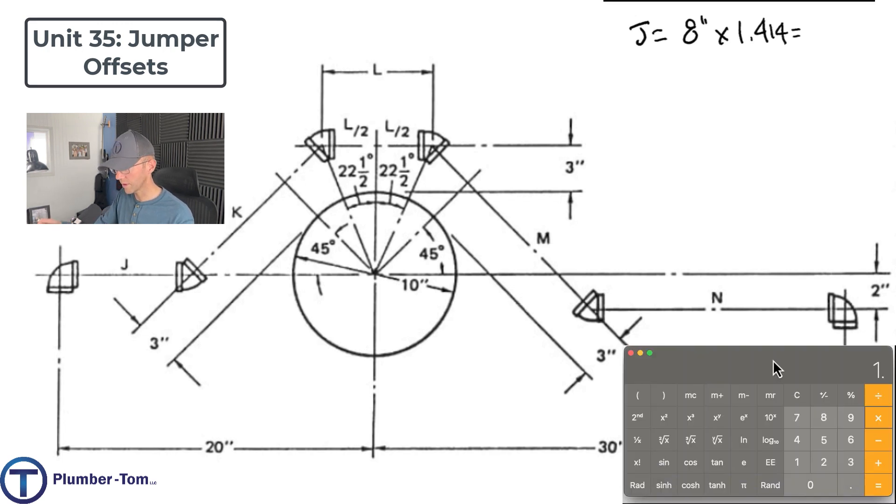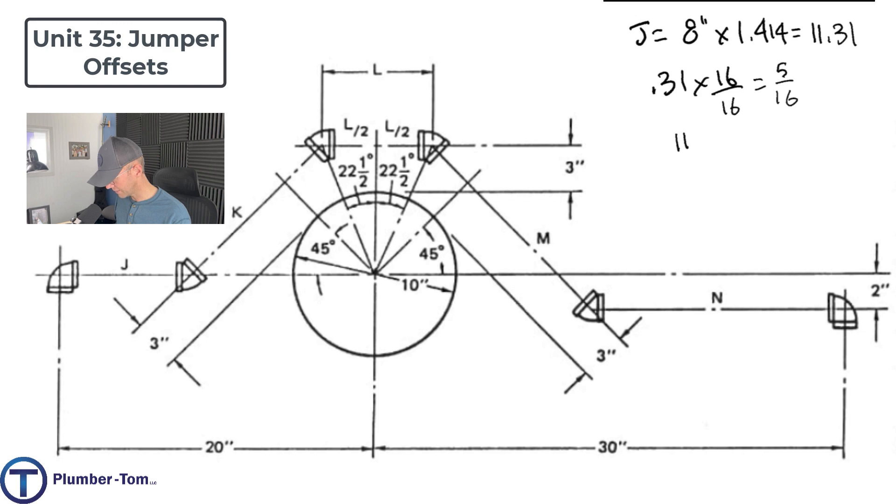Let's figure out what that is then. 8 times 1.414 is going to give us 11.31. If we take that 0.31 times it by 16 over 16 to get us into fractions of an inch, it's going to give us 4.99 or 5 sixteenths. So we end up with 11 and 5 sixteenths. That's just a piece of it, right? It's the part that we would subtract from the overall across the bottom. So we take our 20 inches minus 11 and 5 sixteenths inches. 20 minus 11 is 9. We'll take off another 5 sixteenths. That's going to give us 8 and 11 sixteenths for J. That's our J.